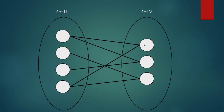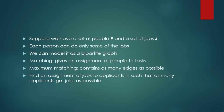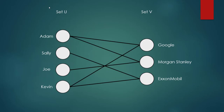This is a bipartite graph. The bipartite matching problem can be illustrated with a set of people P and a set of jobs J. Each person can do only some of the jobs, and we can model it as a bipartite graph. A matching gives an assignment of people to tasks, and a maximum matching contains as many edges as possible. The aim is to assign jobs to applicants such that as many applicants get jobs as possible.